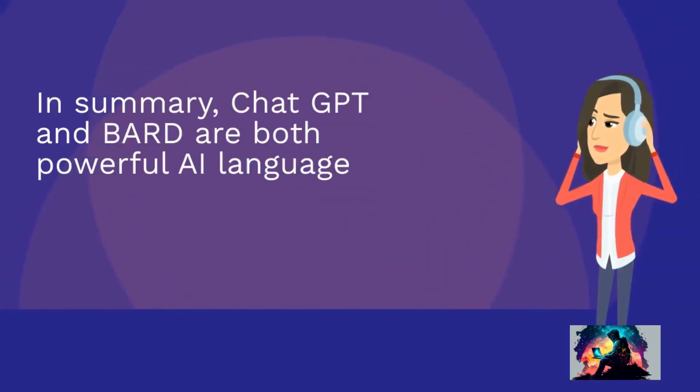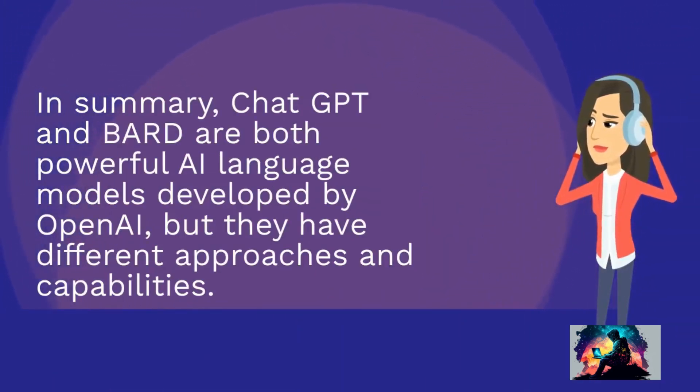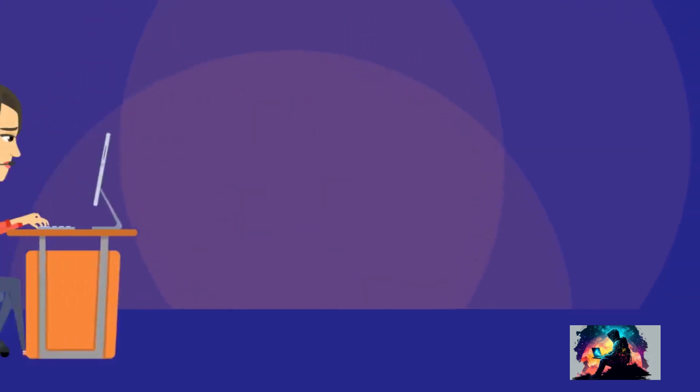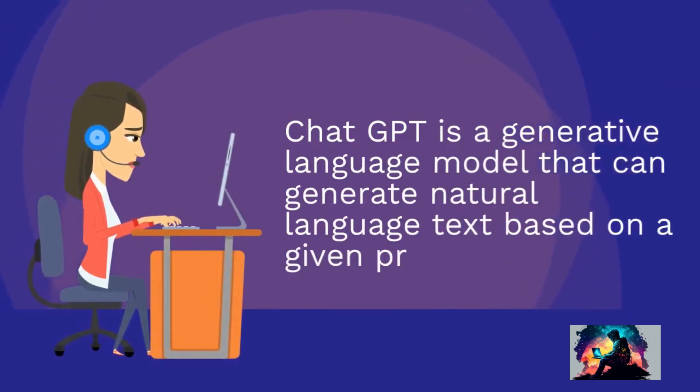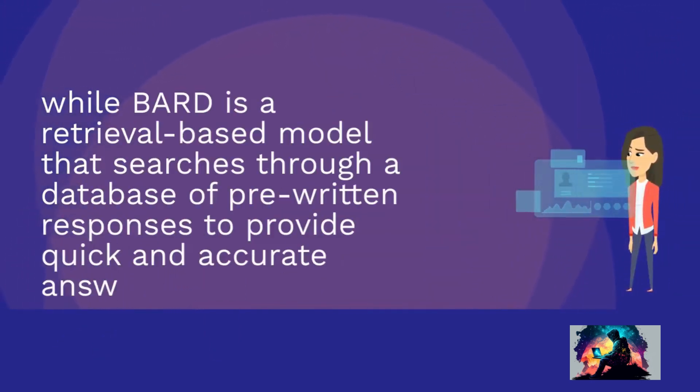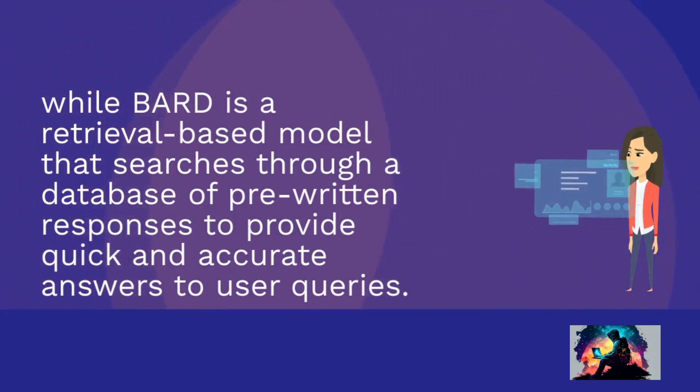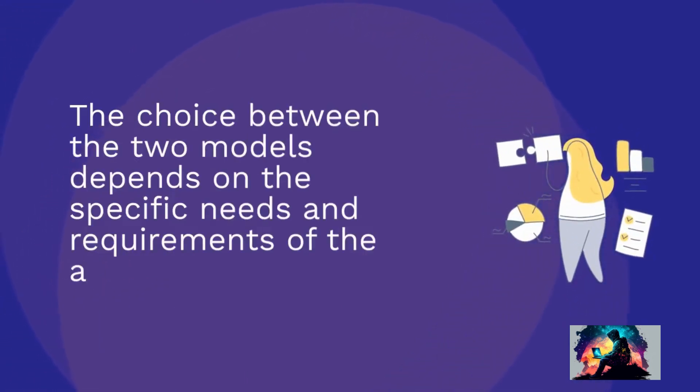In summary, ChatGPT and BARD are both powerful AI language models developed by OpenAI, but they have different approaches and capabilities. ChatGPT is a generative language model that can generate natural language text based on a given prompt or input, while BARD is a retrieval-based model that searches through a database of pre-written responses to provide quick and accurate answers to user queries. The choice between the two models depends on the specific needs and requirements of the application.